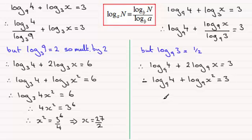We can group these two logs together by the addition rule for logs giving us the log in base 9 of 4x squared and that's going to equal 3. And this reduces down to 4x squared must have been equal to the base 9 to the power 3.